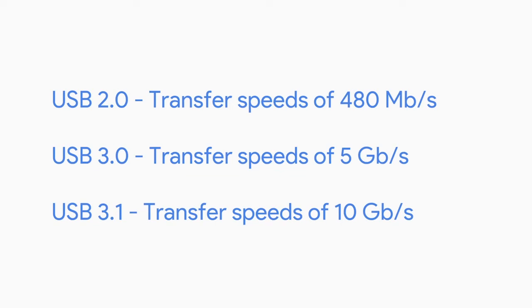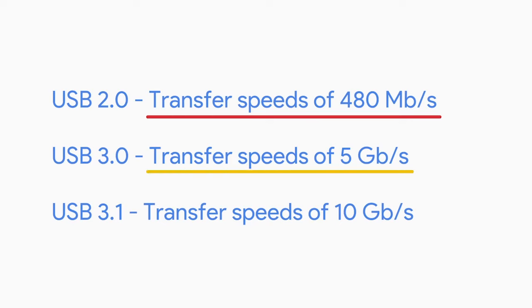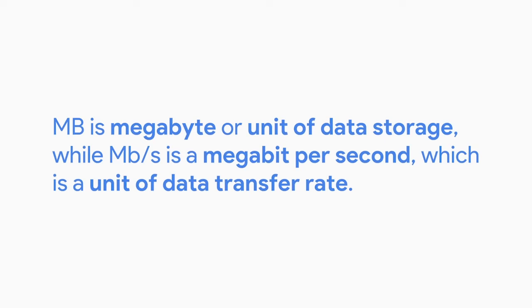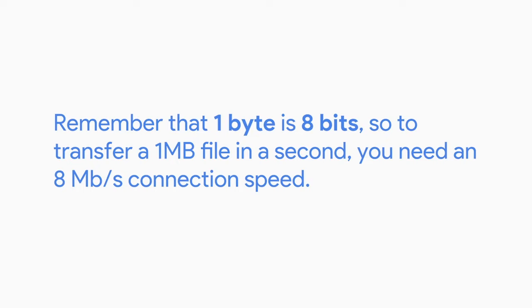Here's a quick rundown of the different USB versions: USB 2.0 transfer speeds of 480 megabits per second, USB 3.0 transfer speeds of 5 gigabits per second, USB 3.1 transfer speeds of 10 gigabits per second. It's important to pay attention to the details: MB is megabyte, a unit of data storage, while Mb/s is megabits per second, a unit of data transfer rate. People often mistake speeds of 40 megabits per second to mean that you can transfer 40 megabytes of data per second — remember that one byte is 8 bits. So to transfer a 1 megabyte file in a second, you'll need an 8 megabits per second connection speed.